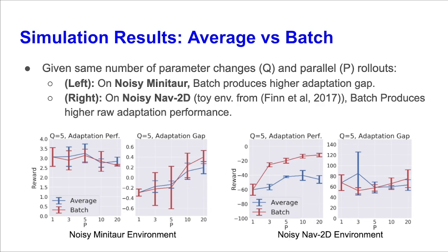Finally, we compare the average batch hill-climbing methods in ES-MAML by constructing noisy simulation benchmarks. To simulate noise, we randomized the Minotaur agent's starting position and added random push forces on the agent. We find that batch produces higher adaptation gaps than average hill-climbing. We also added random push forces to the NAV2D toy environment from the original MAML paper and showed that batch hill-climbing produces higher adaptation performances.